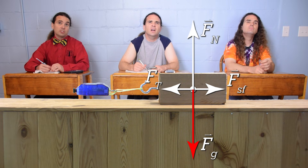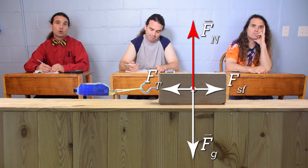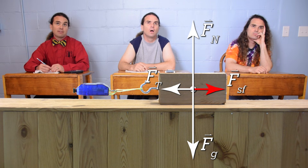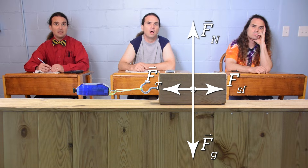The force of gravity is down, the force normal is up, the force of tension is to the left, and the force of static friction is to the right. Static, and not kinetic, friction because the block is not sliding relative to the table.